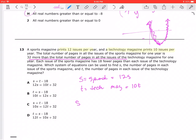Okay, let's see. So then S, the sports magazine, is equal to 32 plus, because it's more than the total number of pages of the technology, plus, so that's going to be the technology tech mag.